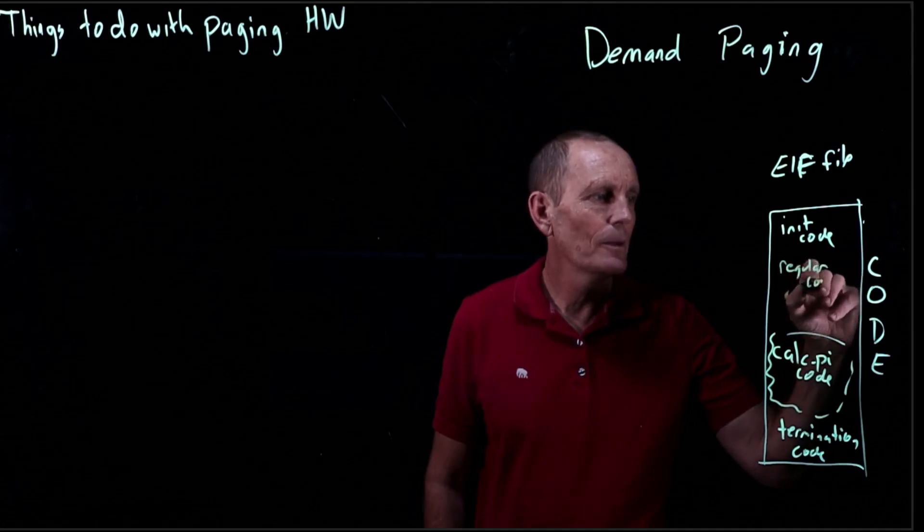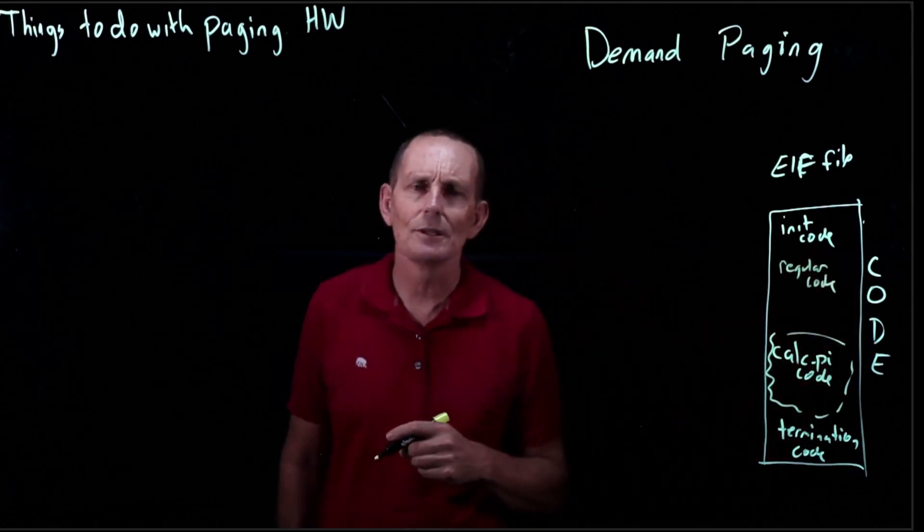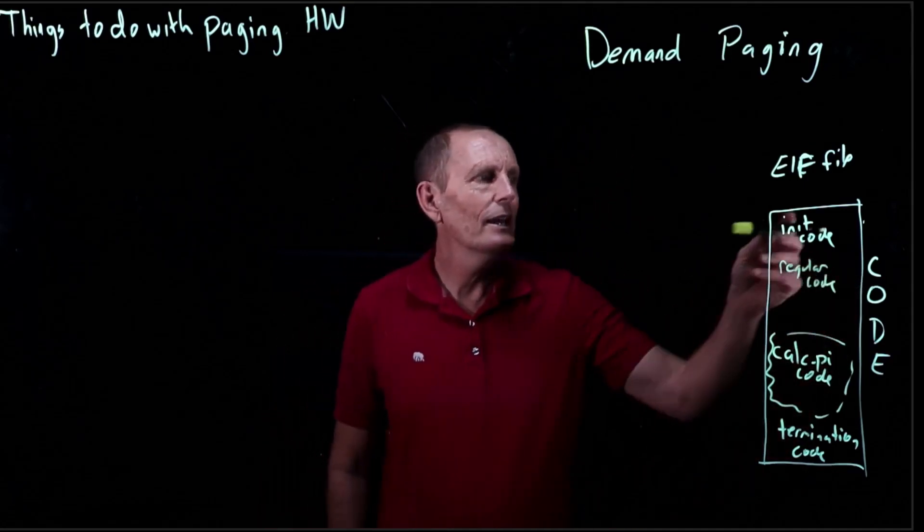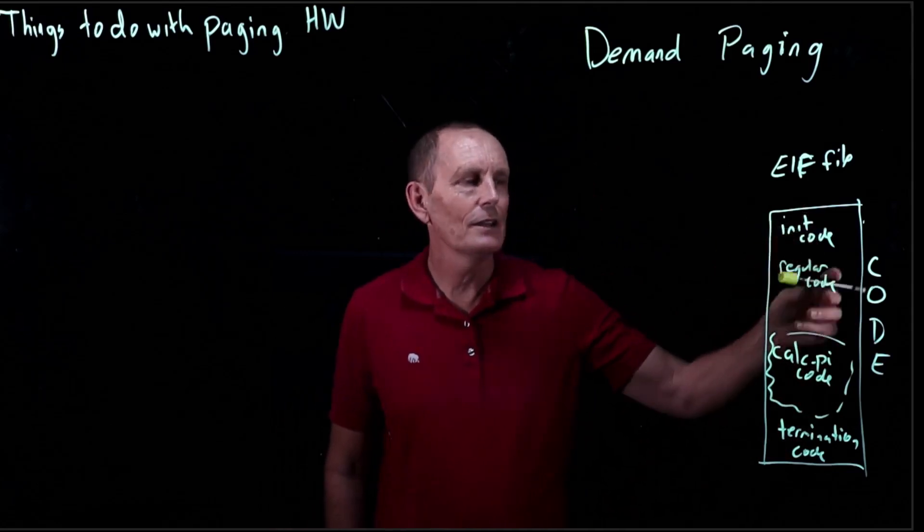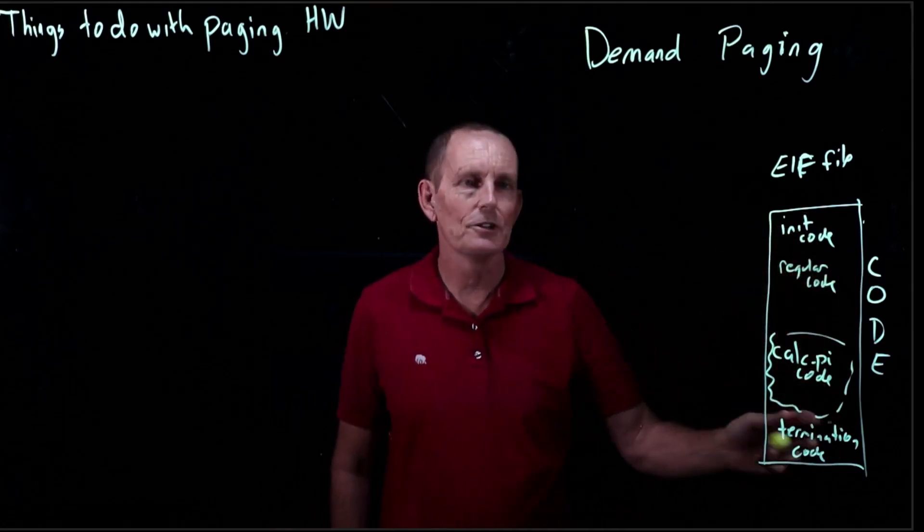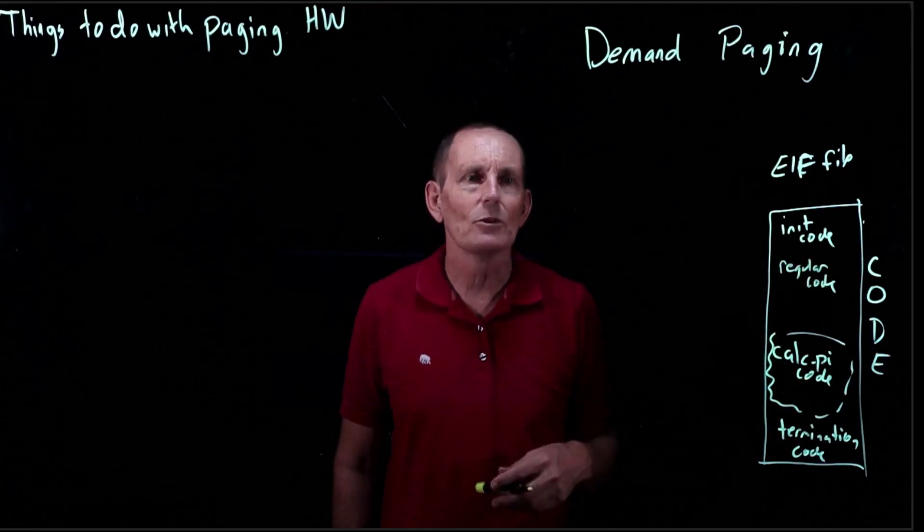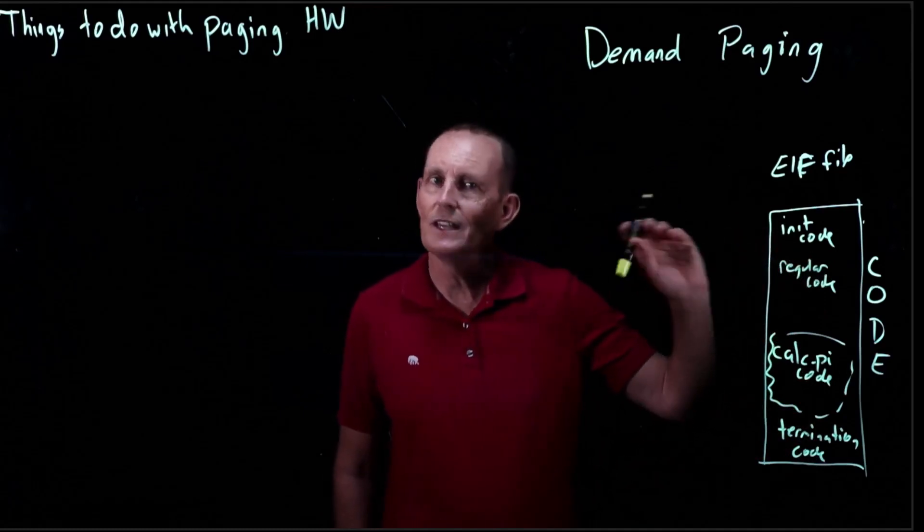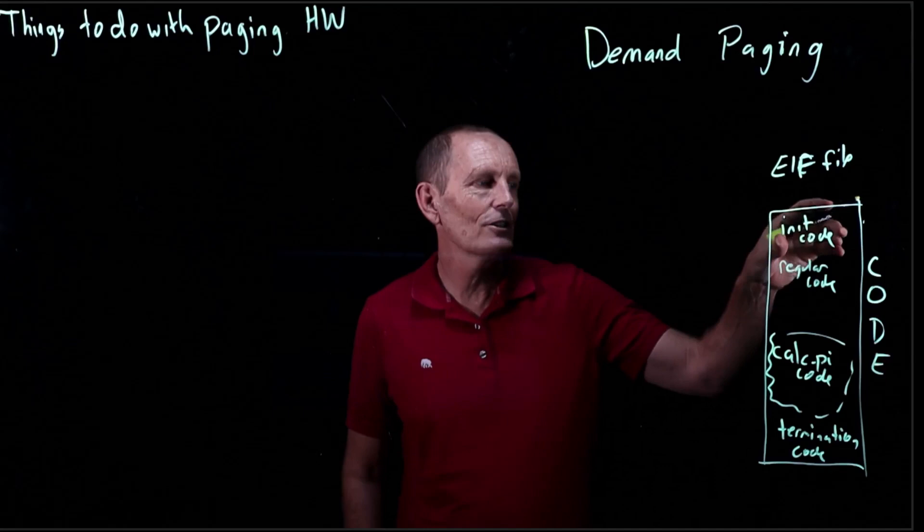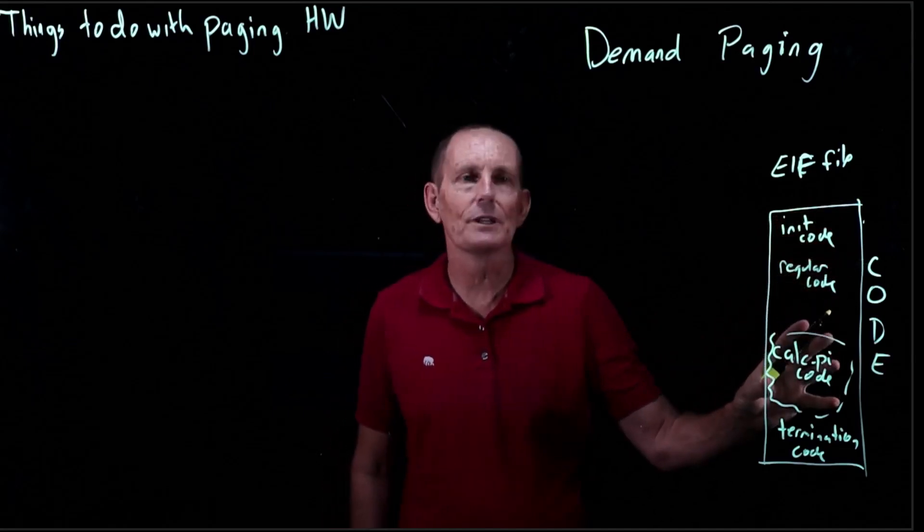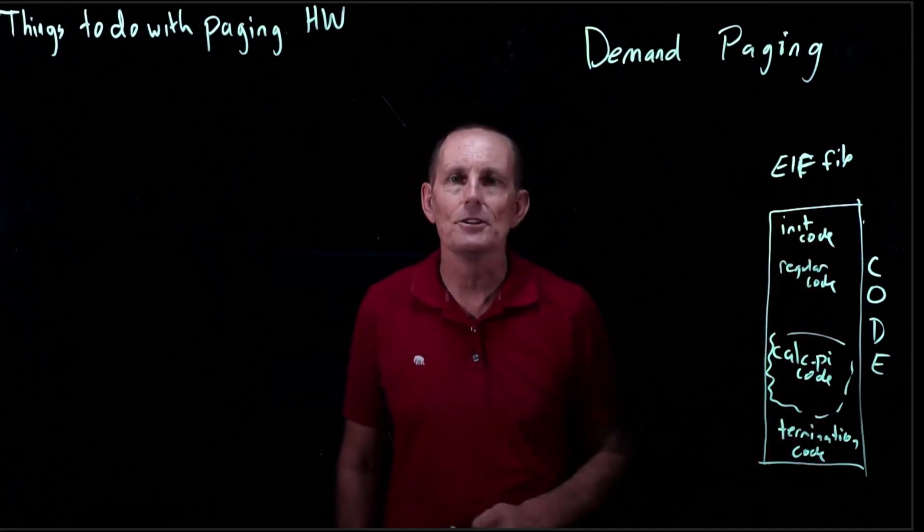So in most cases when the process runs, it runs the initialization code, and then it runs the regular code, and then it runs the termination code. Every once in a while, if the right flag is set and the phase of the moon is set, then it'll run the initialization code and the regular code, but it'll also run the calculation pi code and the termination code.